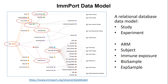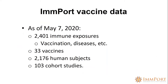The IMPORTER database is more like a relational database. The data is huge — they do have Excel-style downloadable sheets for easy viewing. As of May 7th, they have 2,401 immune studies. The majority — more than half — are vaccination data, but they also have disease data like flu, where somebody got the flu, they get samples and analyze it. Most of them are human data, but they do have lab animal data. For vaccination data, there were 33 vaccines, more than 2,000 human subjects, and more than 100 cohort studies.